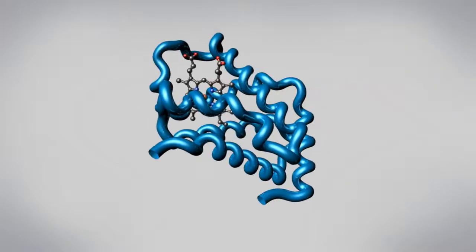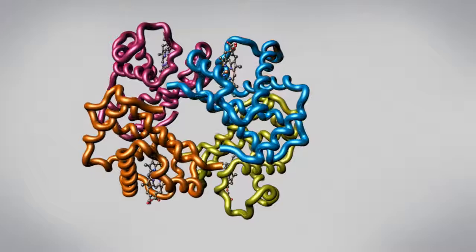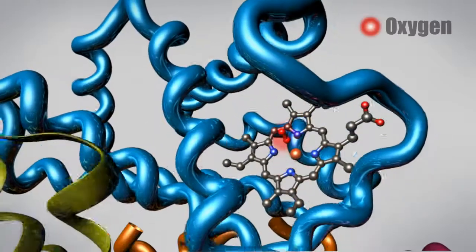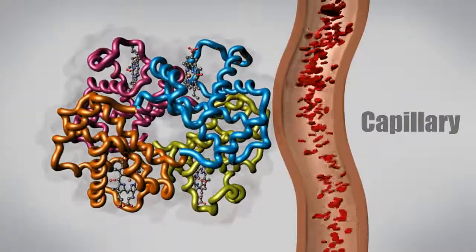Two or more polypeptide chains can come together to form one functional molecule with several subunits. The four subunits of hemoglobin cooperate so that the complex can pick up more oxygen in the lungs and release it in the body.